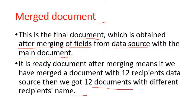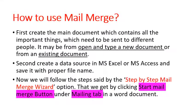So if we prepared one document and 12 different recipients, the body becomes the main document and the 12 recipients' names are the data source. When we merge them, we get 12 separate documents each with different name, address, and phone number, while the main document content remains in the middle. This is why we use mail merge — so we don't have to type the letter again and again.